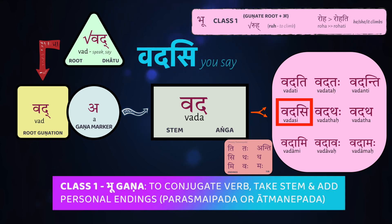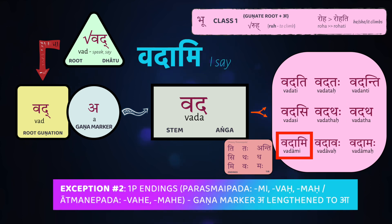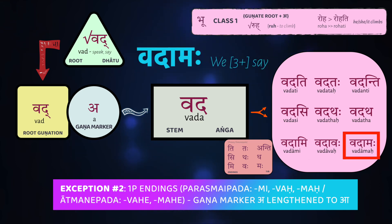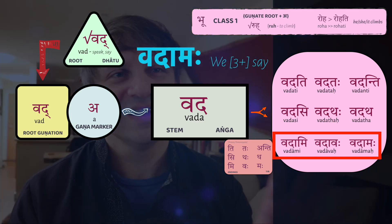The second person is straightforward: vadasi, vadataḥ, vadataḥ. For the first person, the uttama puruṣa, you have to pay attention — there's going to be an augmentation of the 'a', which elongates and becomes ā. So we get vadāmi, 'I speak'; vadāvaḥ, 'we two speak'; and vadāmaḥ, 'we all speak,' three or more. This āmi, āvaḥ, āmaḥ pattern is going to be found in all of our agaṇa classes — 1, 4, 6, and 10 — but it won't be found in the non-agaṇas.